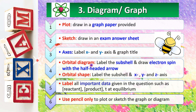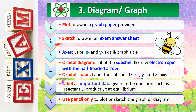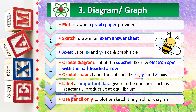For the orbital diagram, please label the subshell and draw the electron spin with a half-headed arrow. For the orbital shape, don't forget to label the subshell and the x, y, and z axes. Label all important data given in the question, such as the concentration of reactant and product, and time at equilibrium, with the correct unit. Please remember to only use a pencil to plot or sketch the graph or diagram.